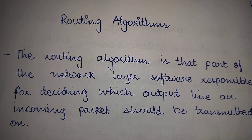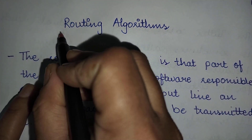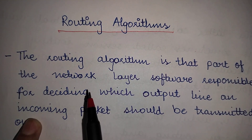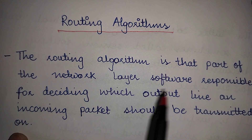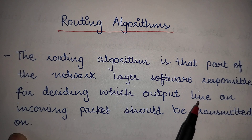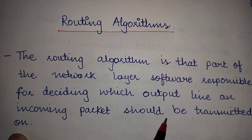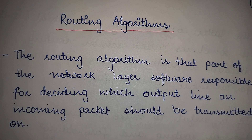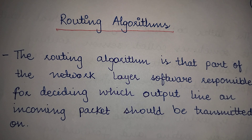Today we are going to study routing algorithms. The routing algorithm is that part of the network layer which is responsible for deciding which output line an incoming packet should be transmitted on. Whenever a packet arrives, which outgoing line should be chosen to forward that packet is decided by the routing algorithm. It selects the route for forwarding an incoming packet to an outgoing line.